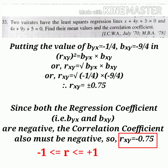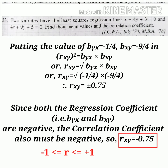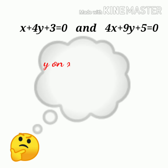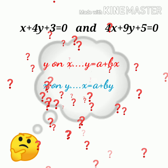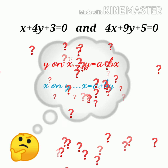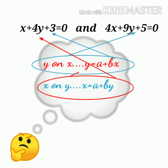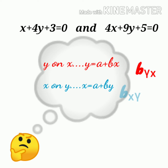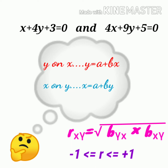In such problems where it is not known which equation is the regression of y on x and which is x on y, you should assume any one equation as y on x and the other as x on y. After getting byx and bxy from this assumption, if you get a valid correlation coefficient, that assumption is correct and that correlation value is the correct answer.